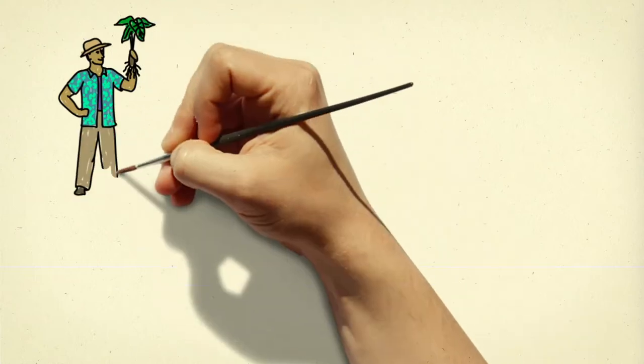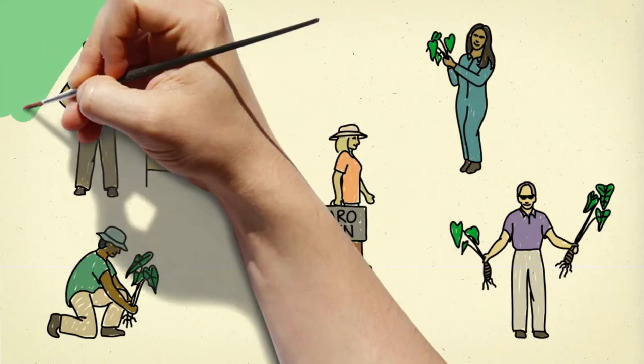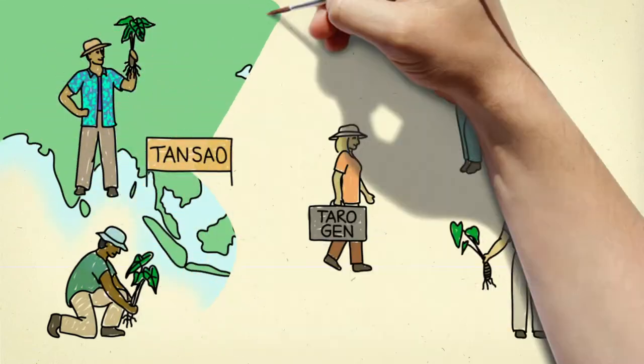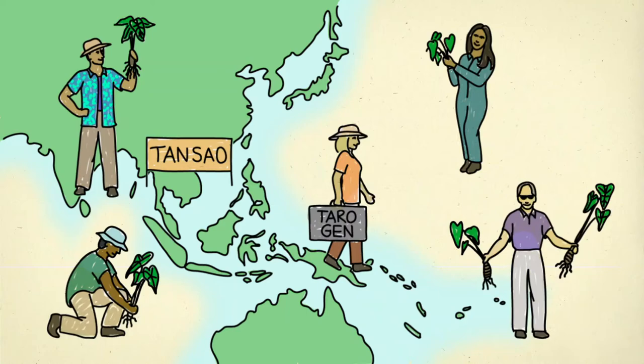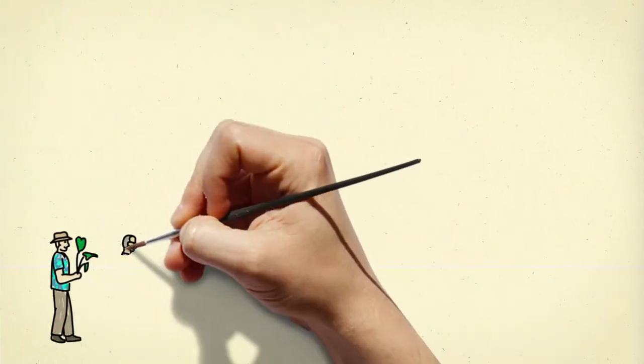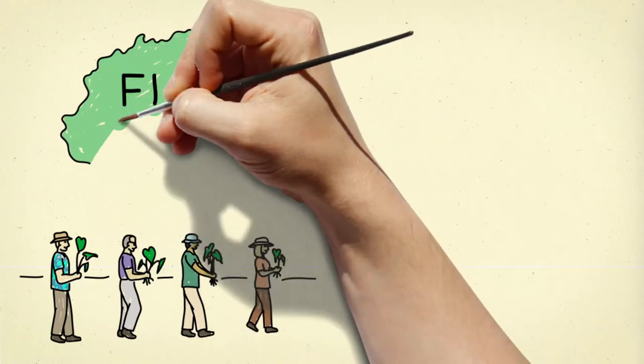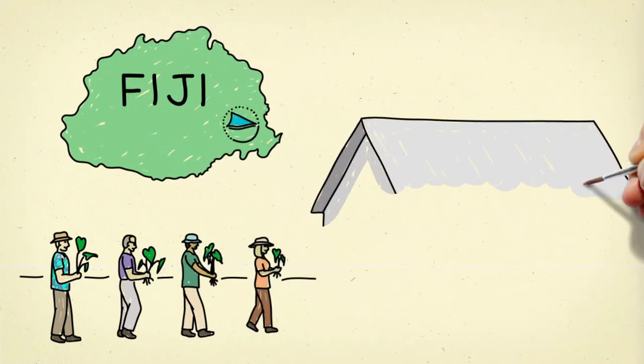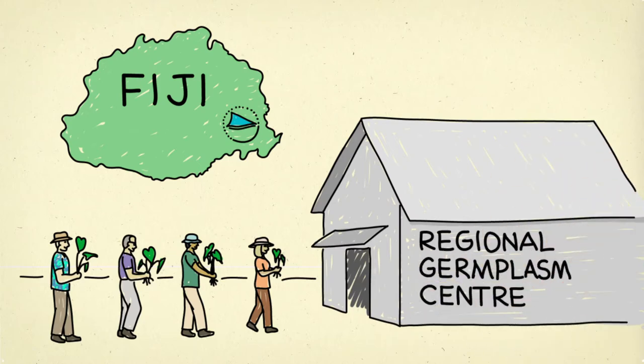Botanists the world over rallied around this agricultural disaster and went on global expeditions to regather blight-resistant Colocasia esculenta varieties of Taro. They brought 2,200 plants back to Fiji, where the regional germplasm center, the Pacific's first seed bank, was founded to safeguard these vital genetic resources.